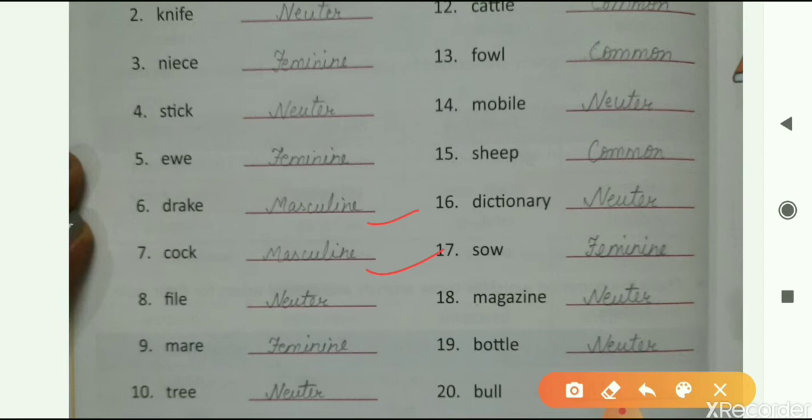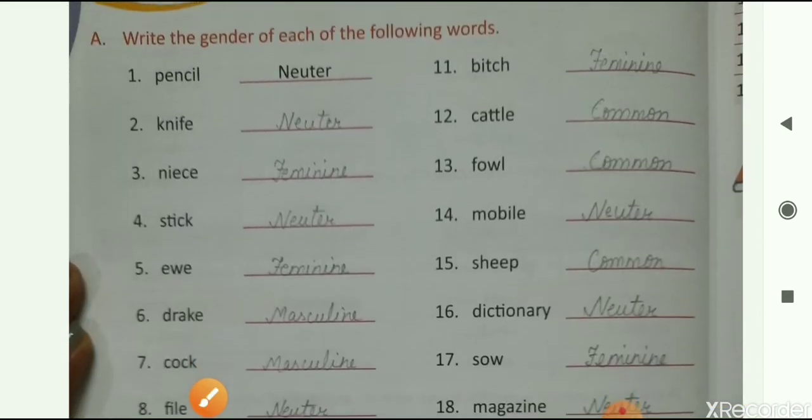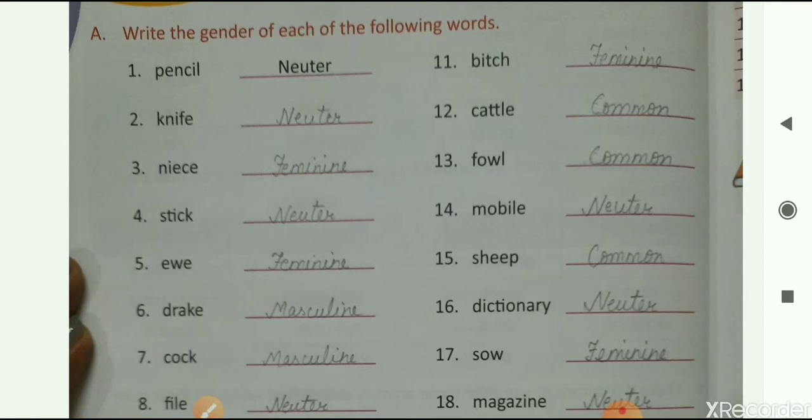Eighth one is file. File is neuter gender. So write here, neuter N-E-U-T-E-R. Ninth one is mare. Mare is feminine. So write here, feminine. Then tree. Tree is also neuter gender. Because we cannot recognize tree as male or female. So we don't recognize it as female or male. So that's why we have to write here, neuter gender.